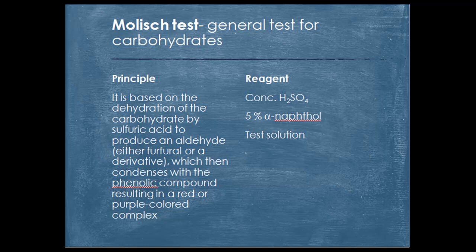The Molisch test is a general test for carbohydrates, based on the dehydration of carbohydrates by sulphuric acid to produce an aldehyde, which then condenses with a phenolic compound resulting in a red or purple color compound. These are the reagents used for the test.